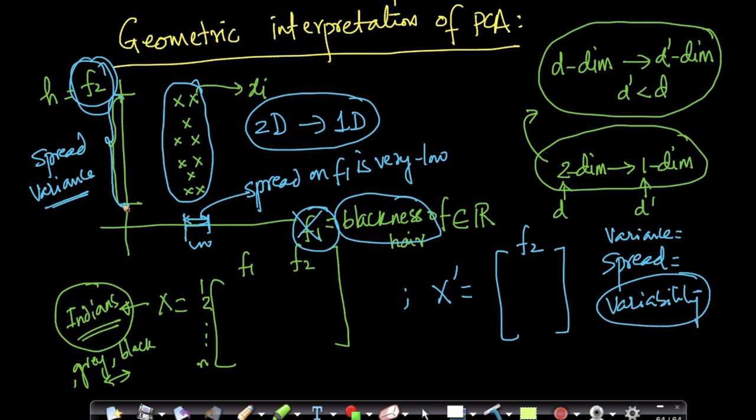The spread is much more widespread on the F2 axis than on the F1 axis. So if I'm forced to create an n×1 dataset from an n×2 dataset — going from 2D to 1D — I'll just skip F1 and keep F2. Let's assume hypothetically we can only visualize one-dimensional data. Then I would simply skip F1 and just keep F2.